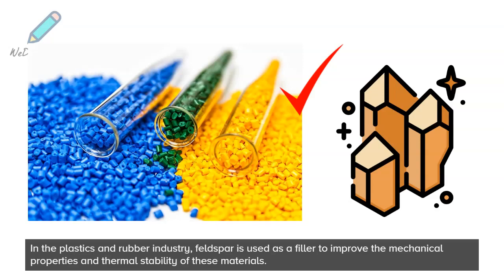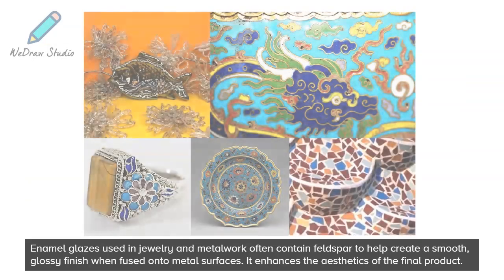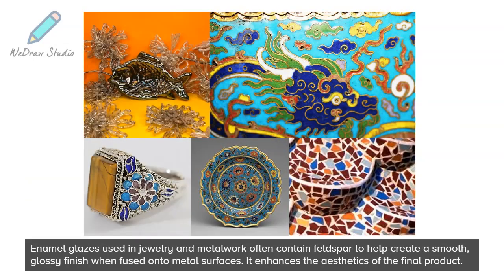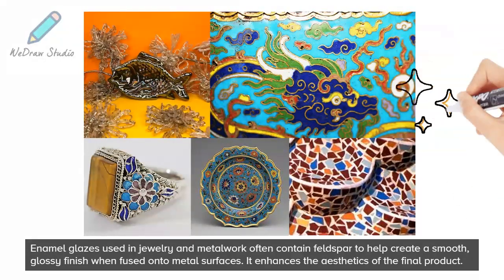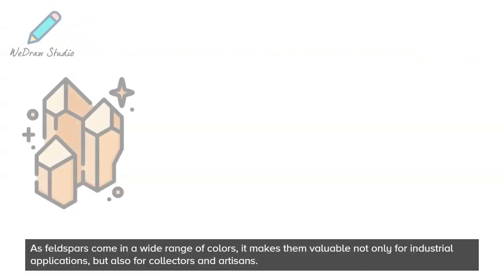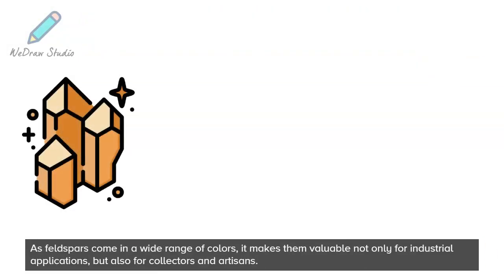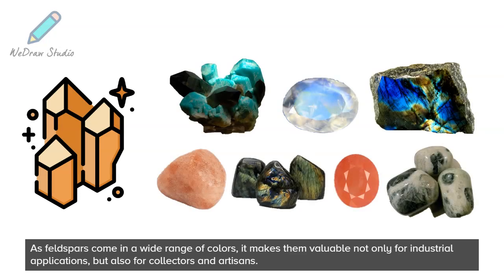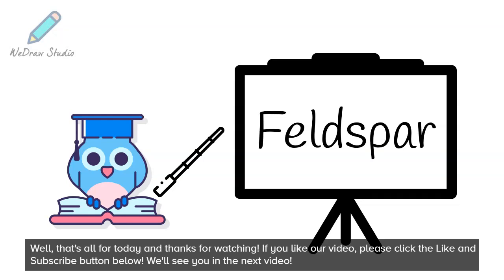Enamel glazes used in jewelry and metalwork often contain feldspar to help create a smooth, glossy finish when fused onto metal surfaces, enhancing the aesthetics of the final product. As feldspars come in a wide range of colors, they are valuable not only for industrial applications but also for collectors and artisans.